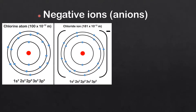Next we look at negative ions. Here we have the chlorine atom. The electronic configuration is 1s², 2s², 2p⁶, 3s², 3p⁵. We have three occupied energy levels with seven valence electrons. The chlorine atom can gain one electron to form the chloride ion, which has a 1− charge. The electronic configuration of the chloride ion is 1s², 2s², 2p⁶, 3s², 3p⁶.